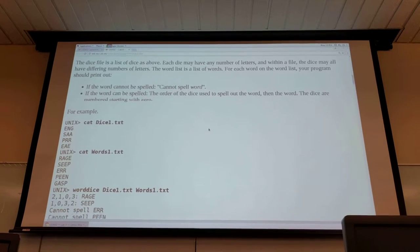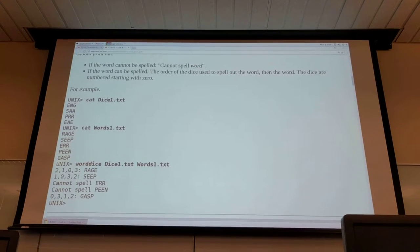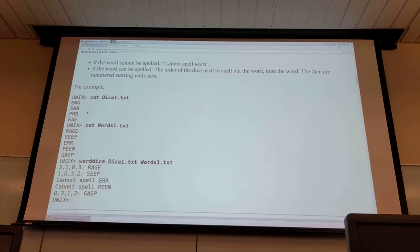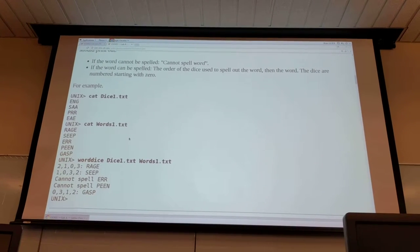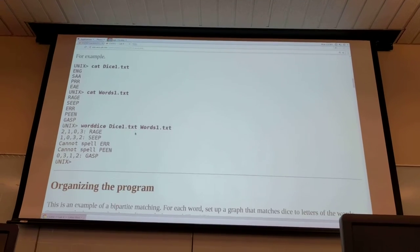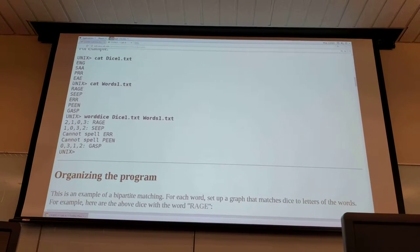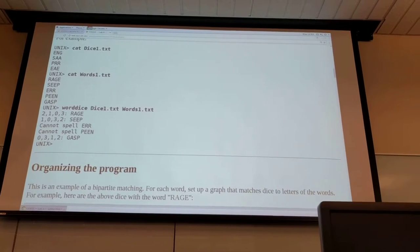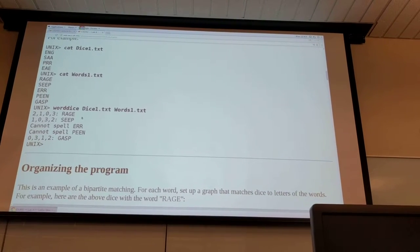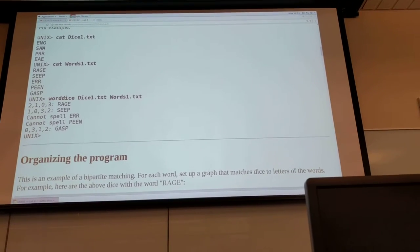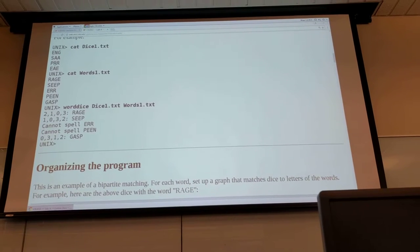So here's some examples you have the dice file that was shown above with the four dice that are three-sided you also have a words list that contains words you're trying to spell. Then when you run it through the program you'll print out the dice order if it can be spelled so you can spell rage using dice two, dice one, dice zero, and then dice four.